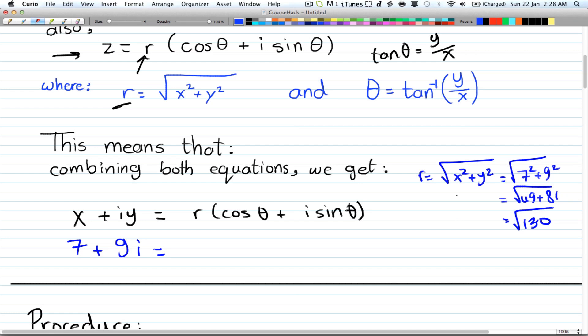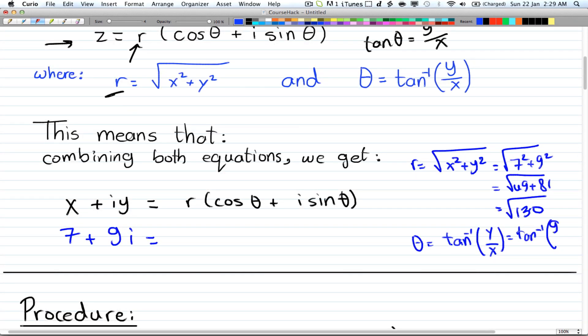So now we know what r is. And θ = tan^(-1)(y/x), which equals tan^(-1)(9/7).